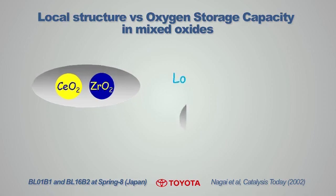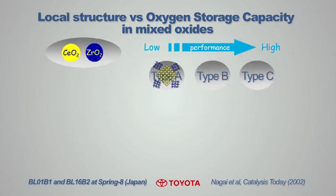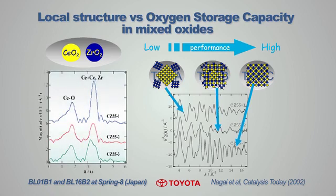Three samples were prepared using different methods and were analyzed, and the EXAFS signals were very different, in particular around the second shell, which probes directly the cerium and zirconium atomic distribution. The results of this work show that the oxygen storage capacity increases with the homogeneity of the distribution of cerium and zirconium.